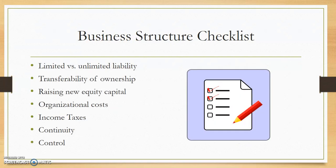Before choosing an entity, there's a business structure checklist that you should go through. Some of the things you need to think about when starting your business: you need to consider limited versus unlimited liability, how you plan on transferring ownership of the business if and when that happens, how you plan on raising new equity capital, what you have budgeted for organizational cost, how you plan on paying your income taxes, and what kind of control you would like to see in the business.